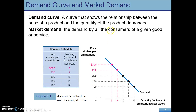Here is a demand curve — it just shows the relationship between the price and the quantity of the product demanded. This is for just smartphones. The market demand would be the demand by all the consumers of a given good or service, which is what we're looking at here because we're just considering the market for smartphones.